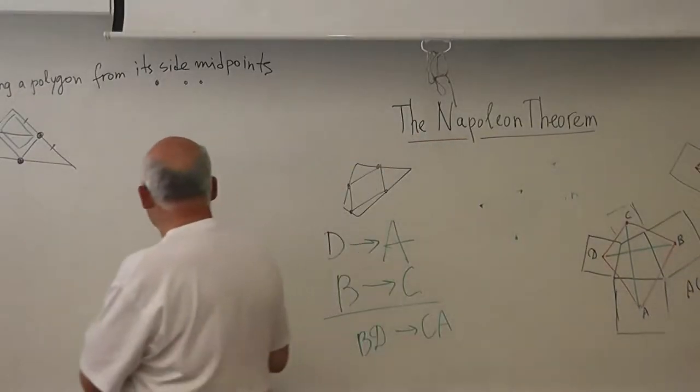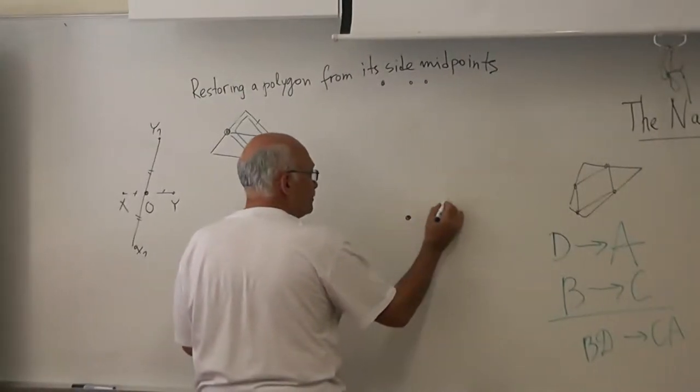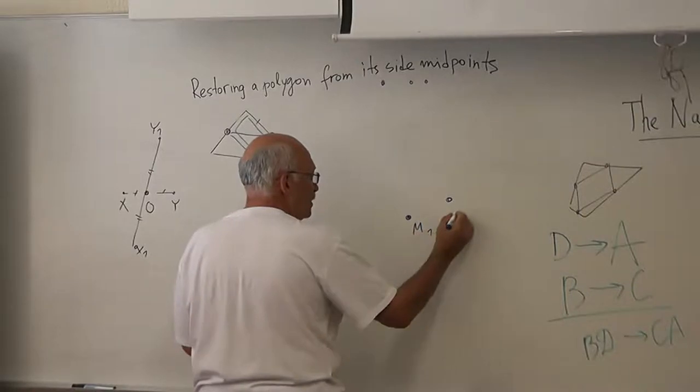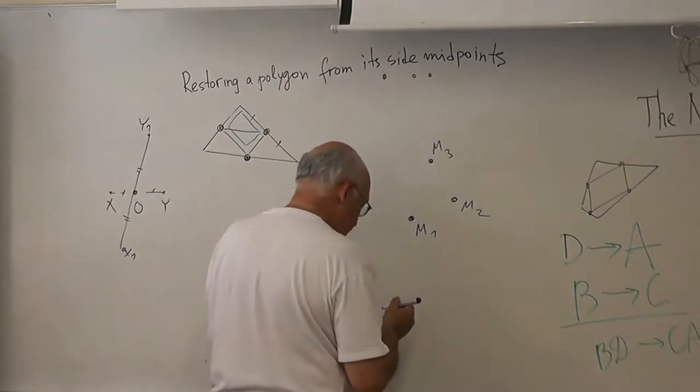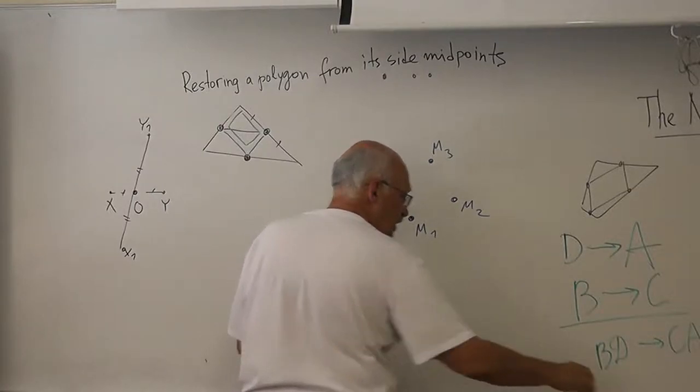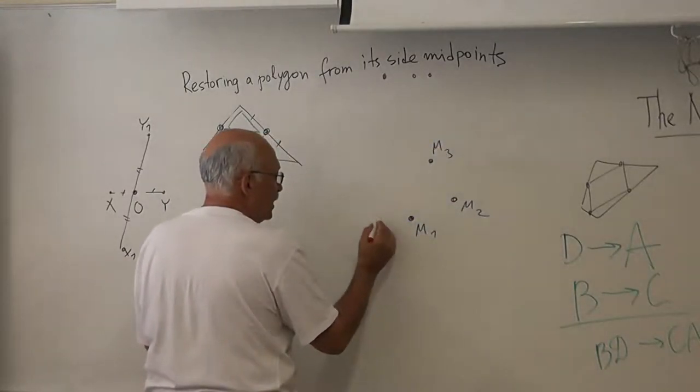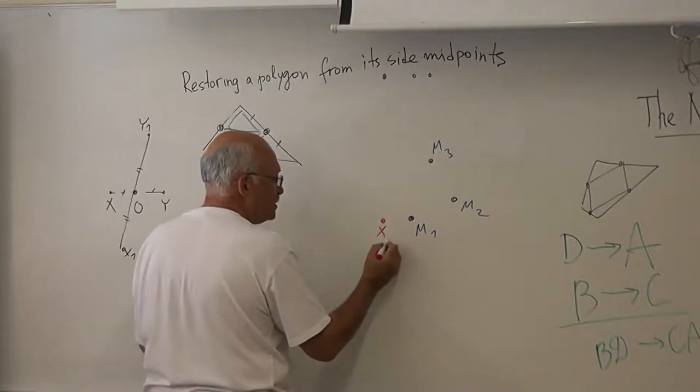I have several points that are supposed to be midpoints: M1, M2, M3, etc. Then I take an arbitrary point X, X0.